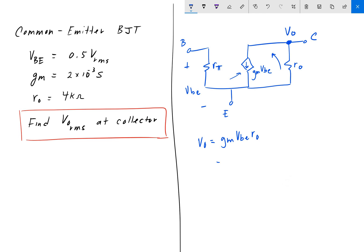And that gives us 2 times 10 to the negative 3 Siemens times 0.5 times 4 times 10 to the 3.